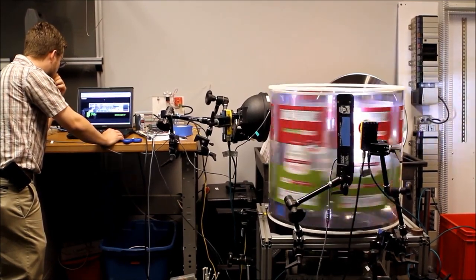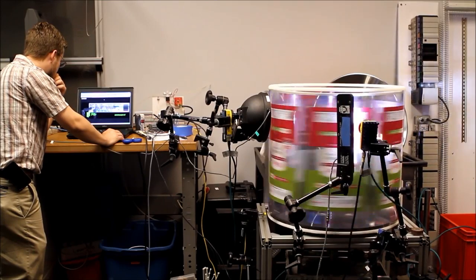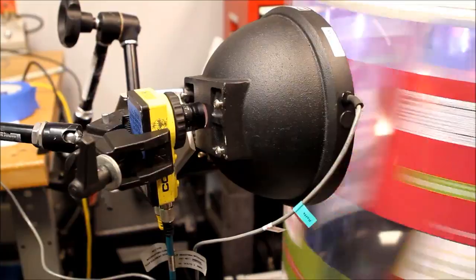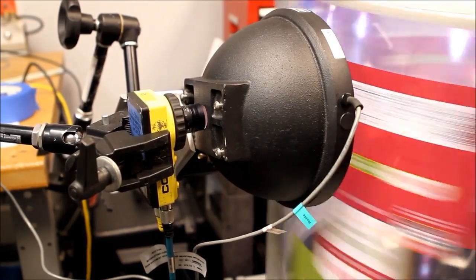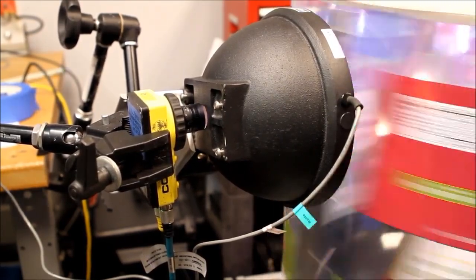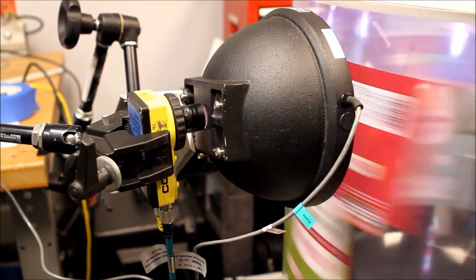In this particular setup, glossy film packaging is being inspected at a rate of 300 parts per minute. The first method of inspection utilizes an area camera and a dome light to provide even lighting across the surface of the film.